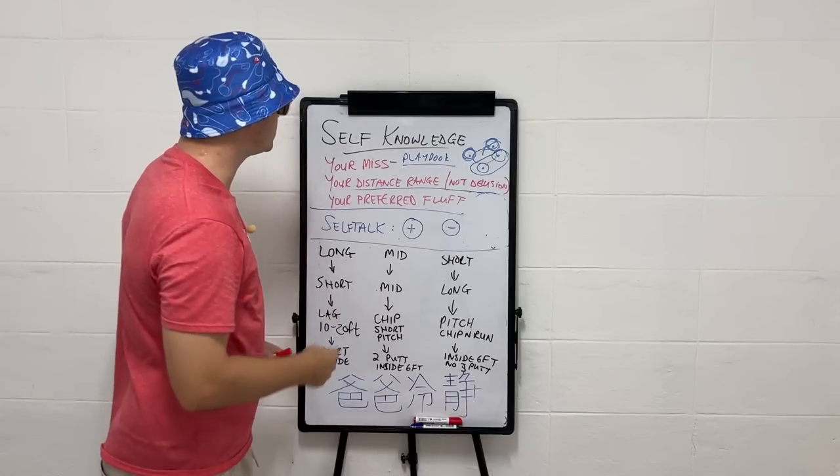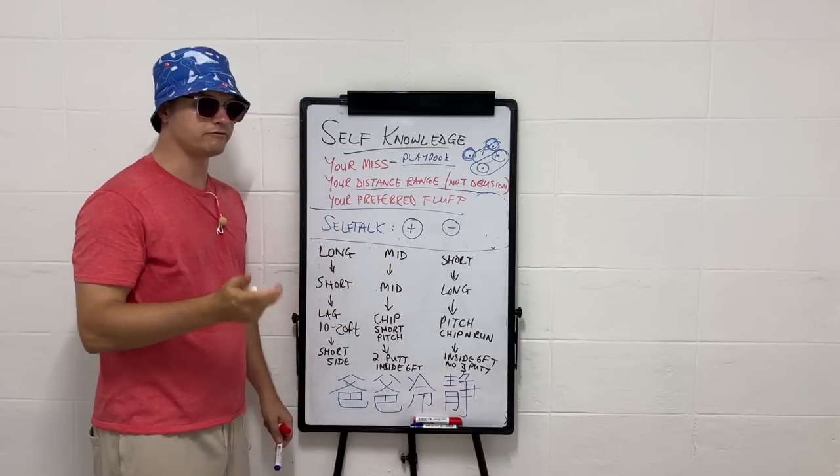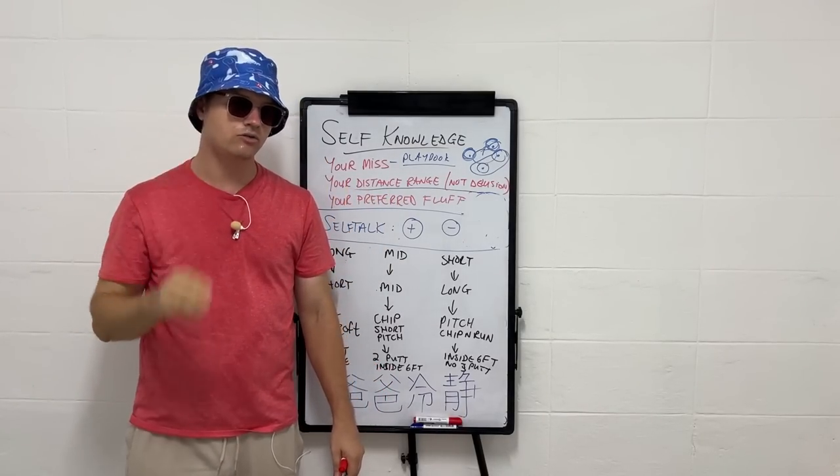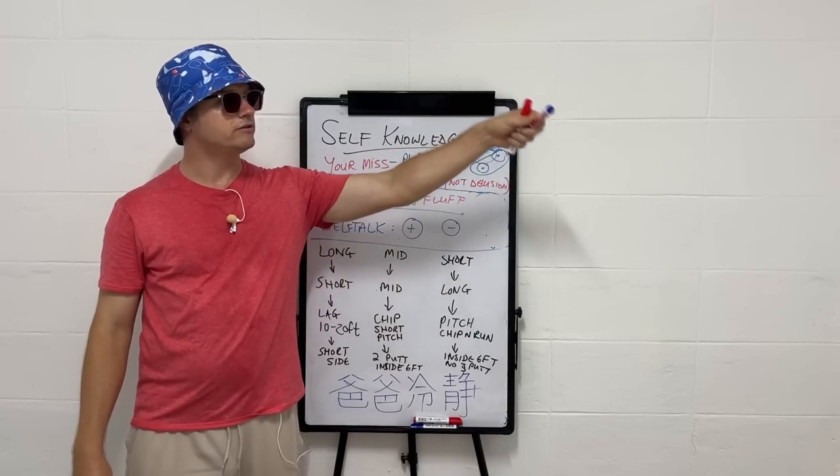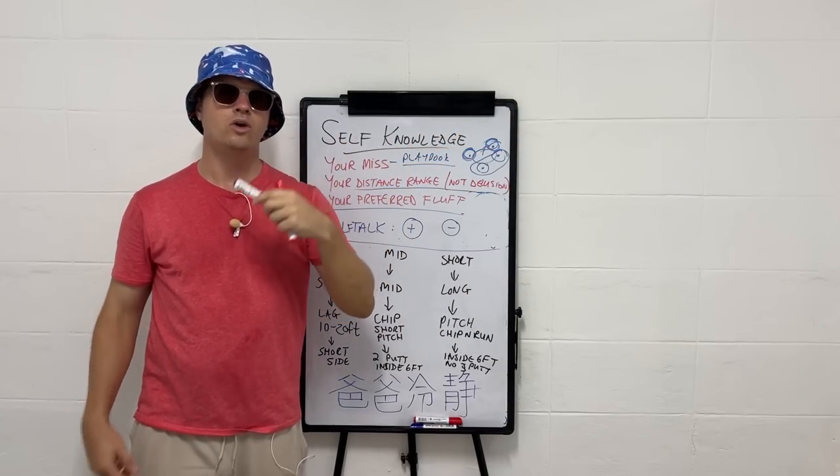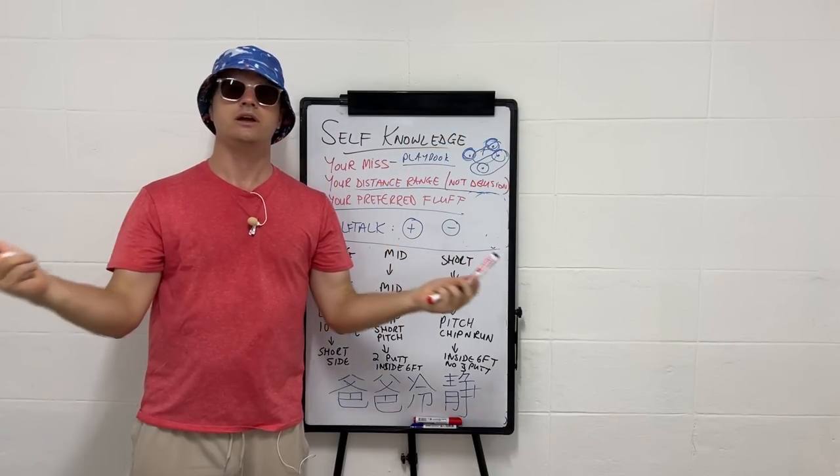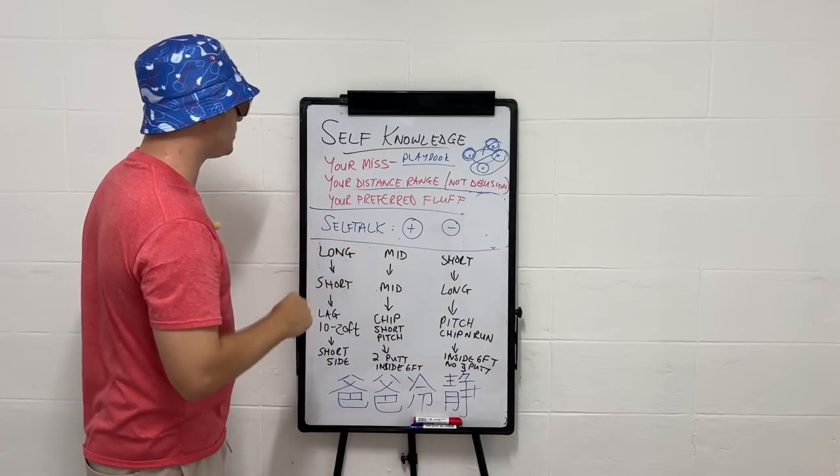And remember the notebook. Take note. Keep notes of your preferred fluff. So when you do hit a bad one, don't get negative, don't get down. Look at the pin. How much green in the front? How much green at the back? What fits into that range? Easy game, players. Avoid the negative death spiral.